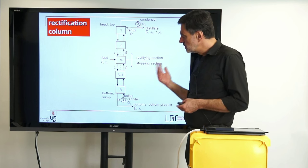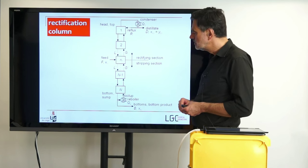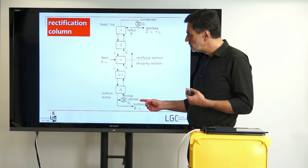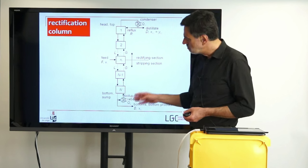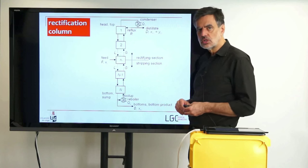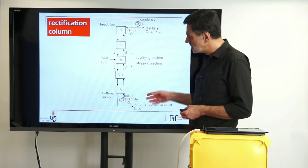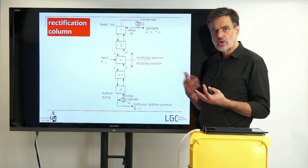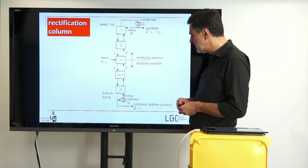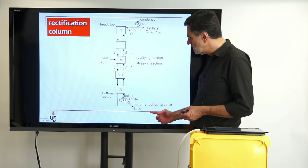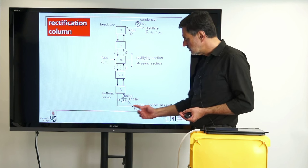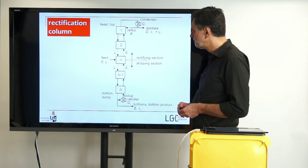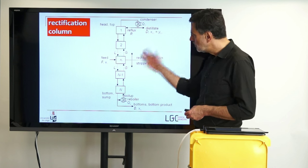At the bottom we have the reboiler. The reboiler produces the so-called boil up that is entering the last stage. This can be built in different ways, and you can also add heat directly to the last stage — that leads to the same balances. The reboiler duty is Q dot B. The bottom product, or the bottoms, is called B dot, with the composition XBI for all components I. So this defines more or less the nomenclature.